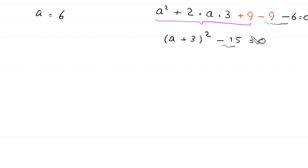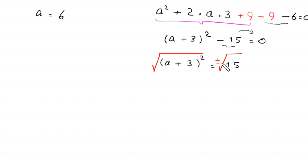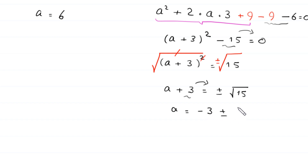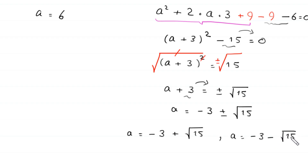Moving negative 15 to the right gives a plus 3 whole squared equals 15. Taking the square root of both sides gives a plus 3 equals plus or minus root 15. Moving 3 to the right, a equals negative 3 plus or minus root 15, giving a equals negative 3 plus root 15 or a equals negative 3 minus root 15.